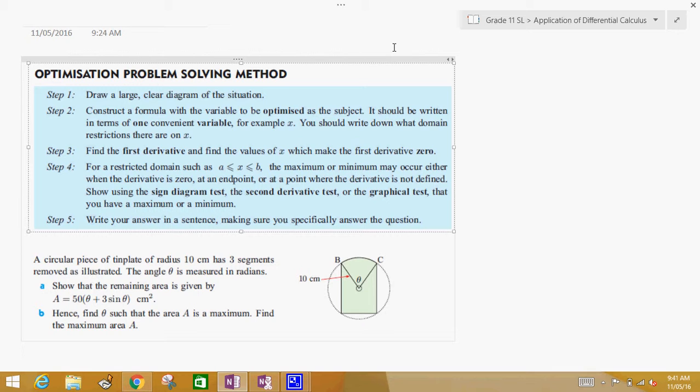Step four, test to see if it's a maximum or minimum. There's three different ways that you can do it. One, you can do a sign diagram testing the derivative before and after to see if it goes from positive to negative, which would be a maximum, or negative to positive, which would be a minimum. Or, you could do a second derivative test, or you could graph the function to see if it's a max or min.